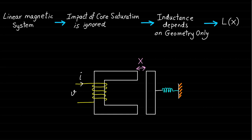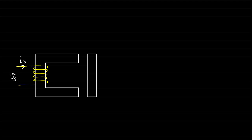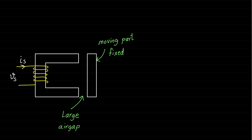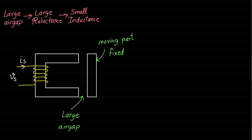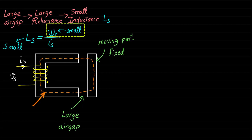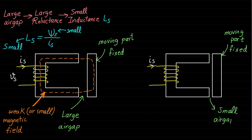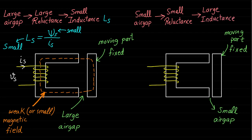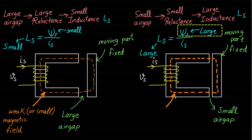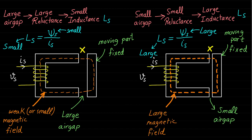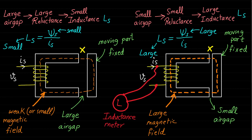Let's give more details. If we excite this system with a certain current IS while the moving part is fixed at a large air gap, then the magnetic circuit with this large air gap will have large reluctance and small inductance, and therefore the magnetic field will be low or weak. You can install an inductance meter to monitor the inductance change. Changing the air gap length x will change the geometry and therefore the inductance of the magnetic circuit.